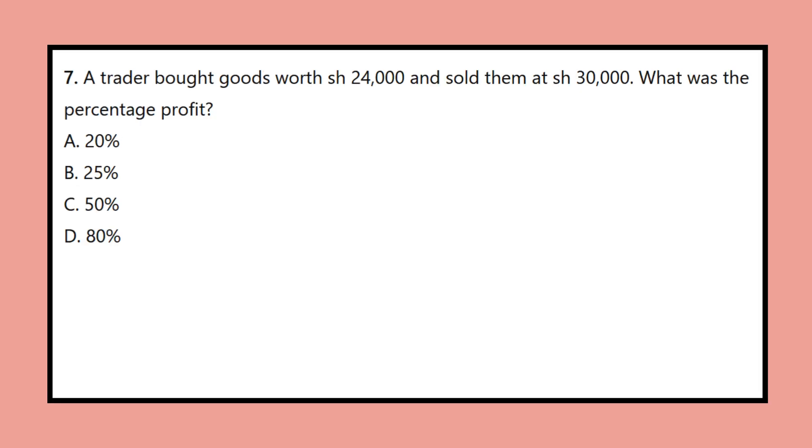Question 7: A trader bought goods worth SH 24,000 and sold them at SH 30,000. What was the percentage profit? A. 20%, B. 25%, C. 50%, D. 80%.